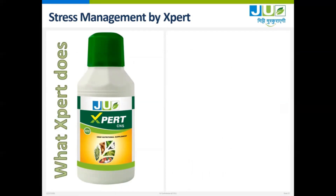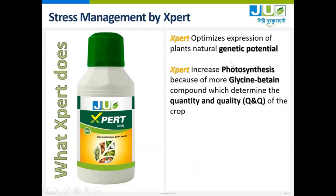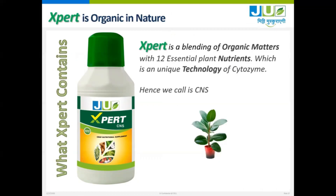What does EXPERT do? EXPERT optimizes the expression of the plant's natural genetic potential. EXPERT increases photosynthesis because of more glycine betaine compound, which determines the quantity and quality of the crop. EXPERT protects against over production of ROS in the plant and ensures proper function of cells and growth during stress conditions. EXPERT also provides additional nutritional support — that is why we call it CNS, Crop Nutritional Supplement. EXPERT is organic in nature and is a blending of organic matter with 12 essential plant nutrients, which is a unique technology of Cytozyme.